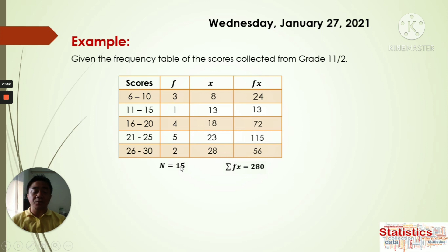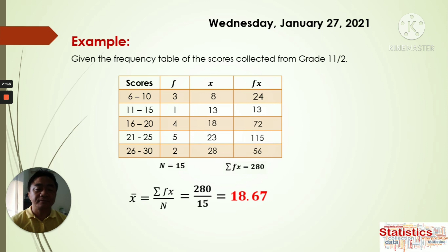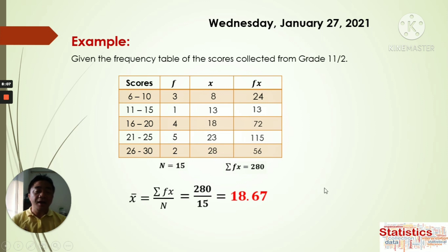Now we can substitute into our formula. x̄ is equal to sigma fx divided by n. Substituting: sigma fx is 280 divided by n which is 15. The answer is 18.67. So the average score for this data is 18.67. The midpoint data range from 8 to 28, and the average mean across all of them, weighted by frequency, is 18.67.